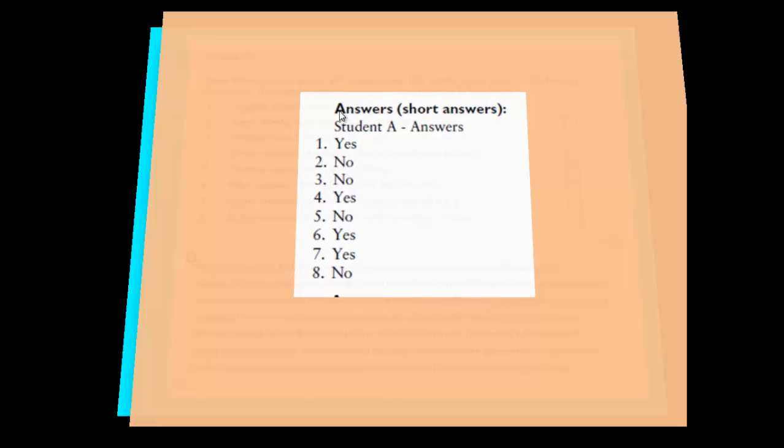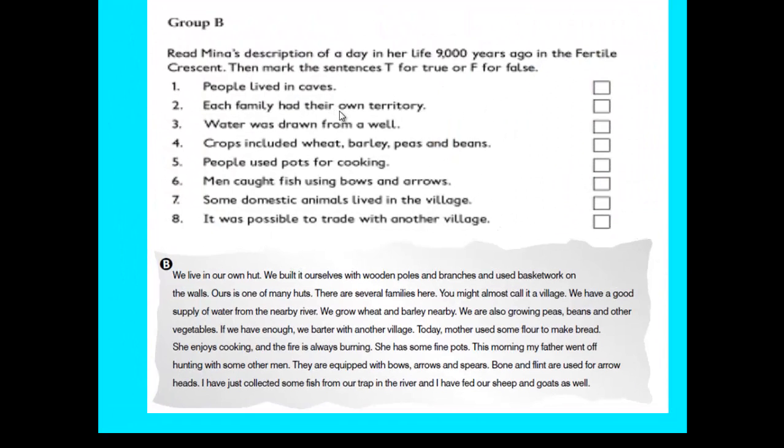Now let's move to the second group, Group B. Read Mina's description of a day in her life 9,000 years ago in the Fertile Crescent. Then mark the sentences true or false - F for false and T for true. Let's read the text first.